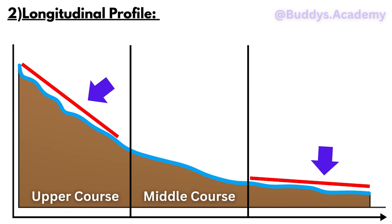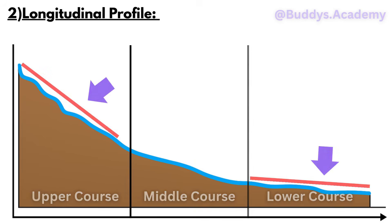And once we get to our lower course, we can see how gentle that gradient actually is. That's where you're going to find your wide floodplains. Deposition is going to take place — remember, deposition is when your sand or rocks are going to be laid down — and that's going to then lead to features like deltas.